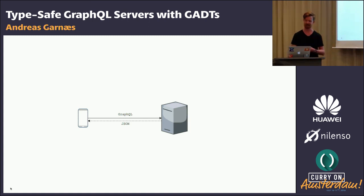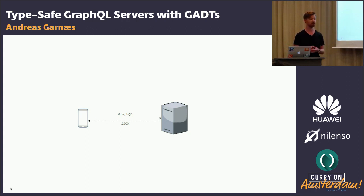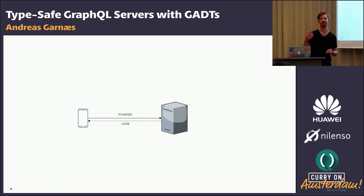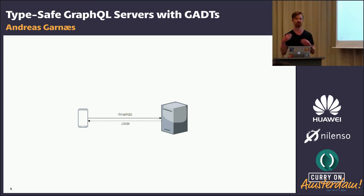GraphQL is a query language that was released by Facebook in 2015. Although it's agnostic to the transport layer and the serialization mechanism, it's by far most often used in the context of web APIs — HTTP for the transport layer and JSON for the serialization mechanism. In that sense, it's kind of in the same space as REST, competing with REST and trying to address some of the issues people have found with REST over the years.